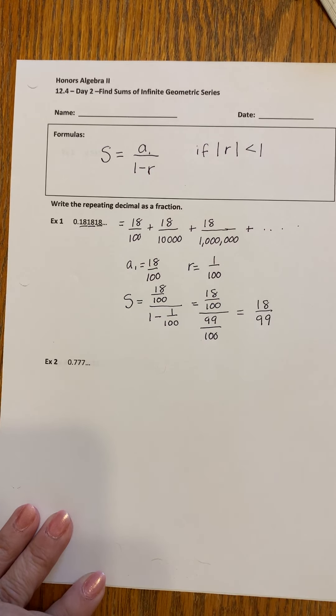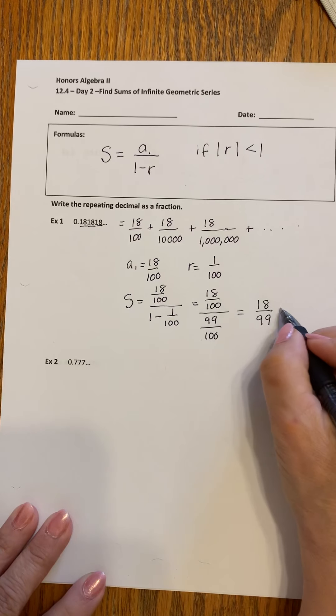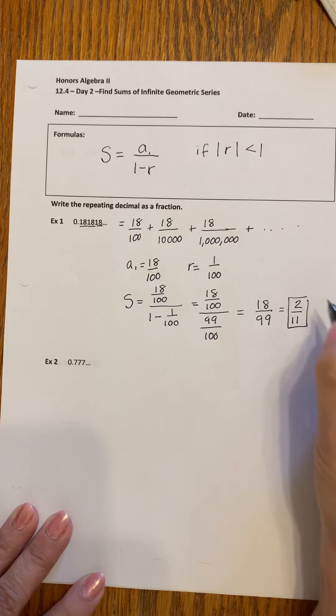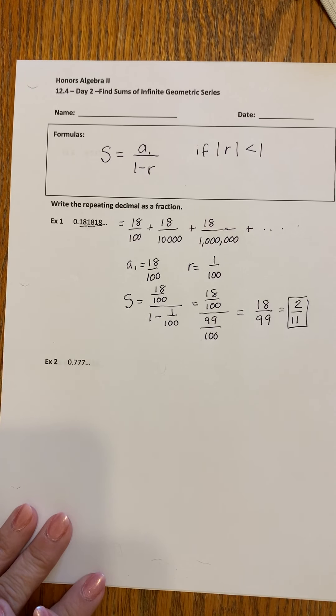Which just would reduce, doesn't it? 9 goes into everything. 2 elevenths. 18 over 99 or 2 elevenths.